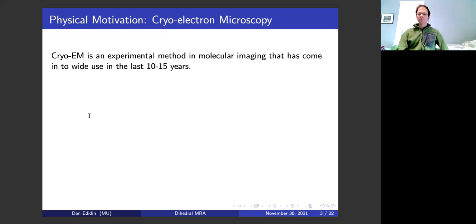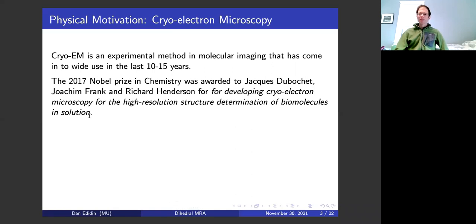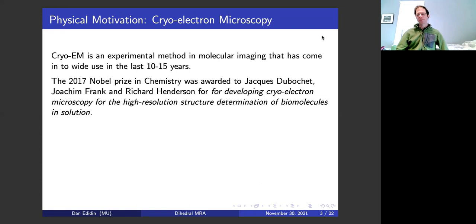Cryo-EM is a big deal in molecular imaging. It came into wide use in the last 10 to 15 years. The 2017 Nobel Prize in Chemistry was awarded to Du Bochet, Joachim Frank, and Richard Henderson. Du Bochet had the physical technique first, and then there were improvements in resolution over the years. The technique is about 40 years old, but it's probably only been since the 2010s where they were really getting very high resolution.